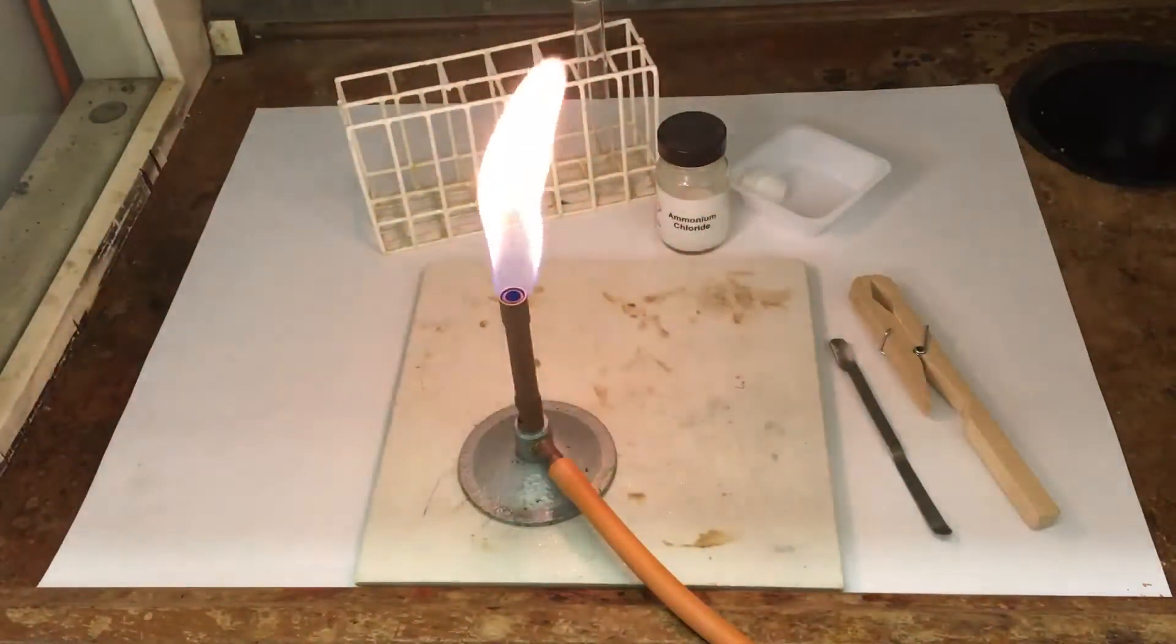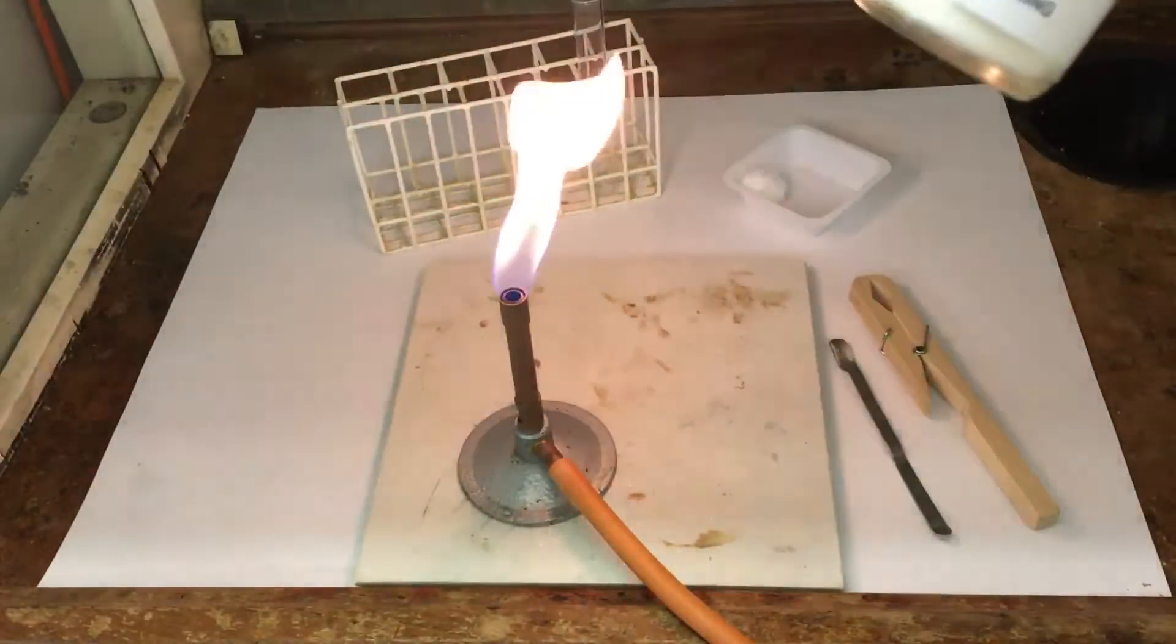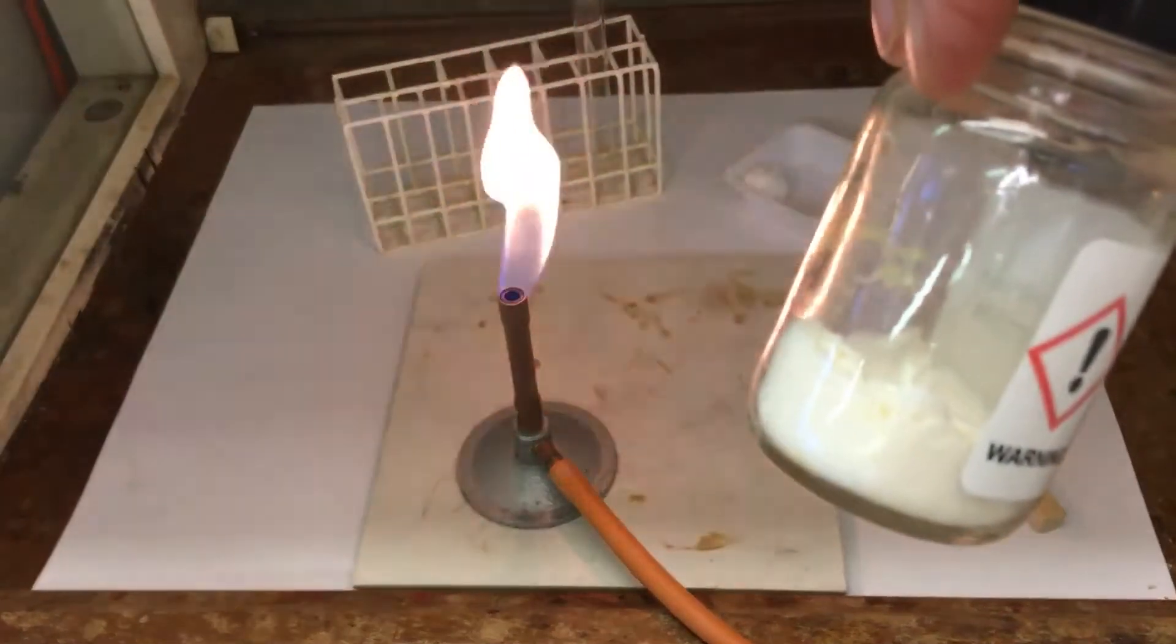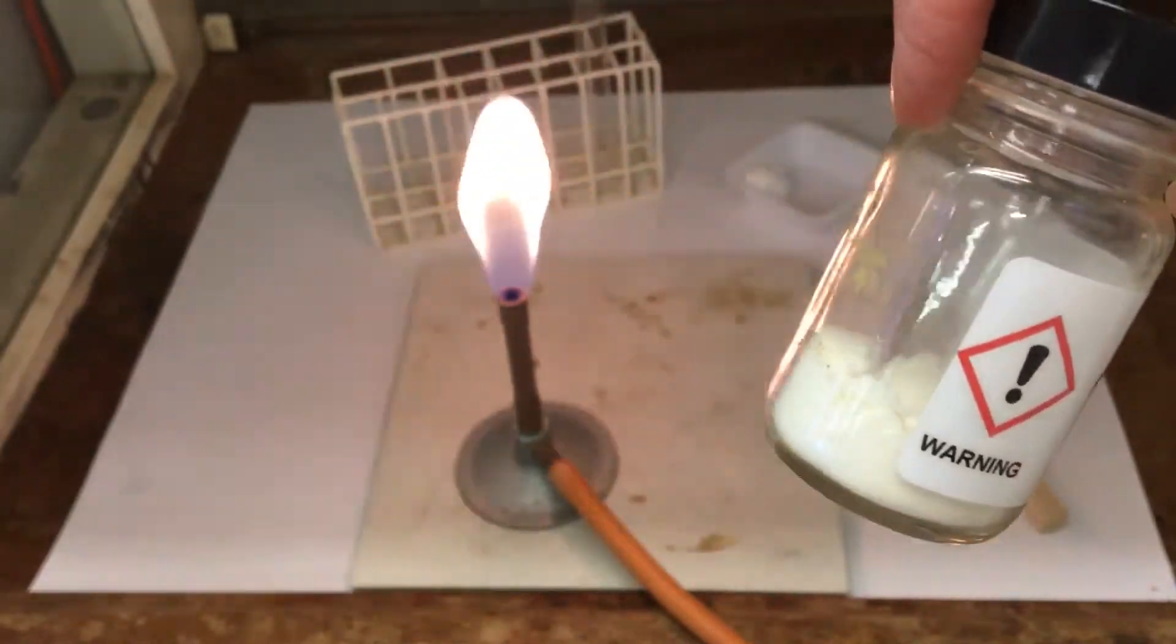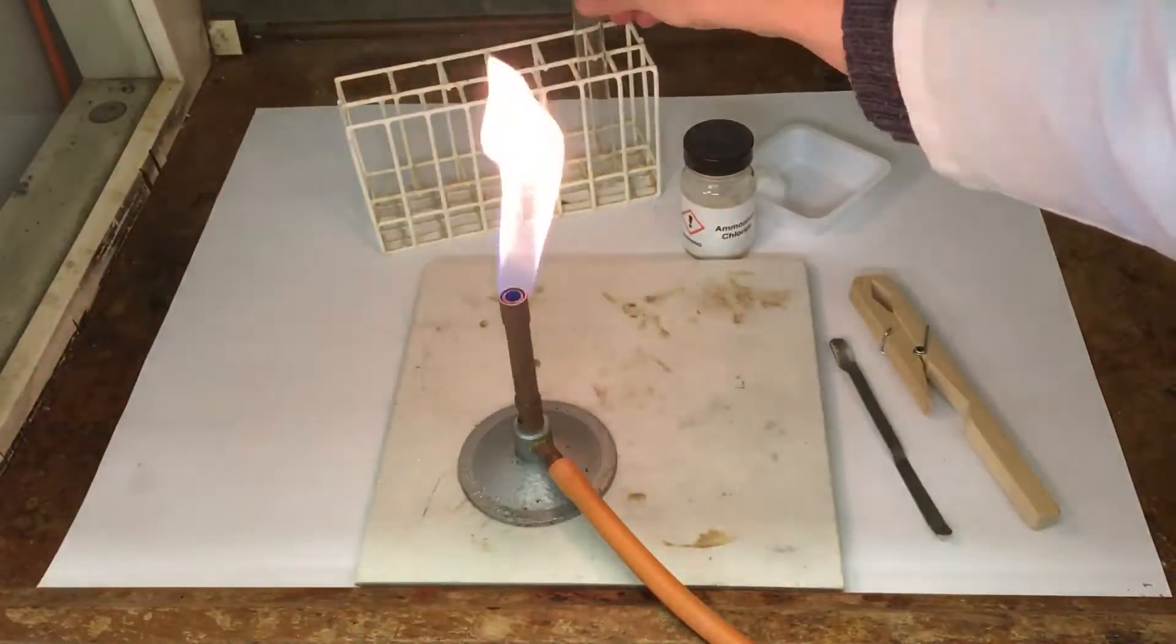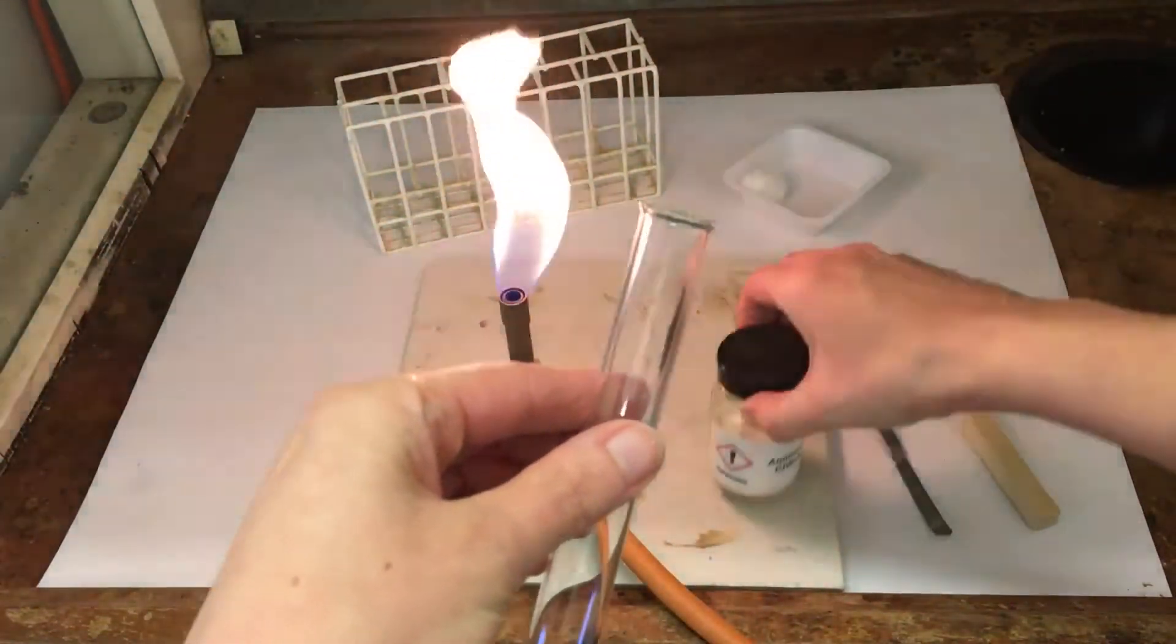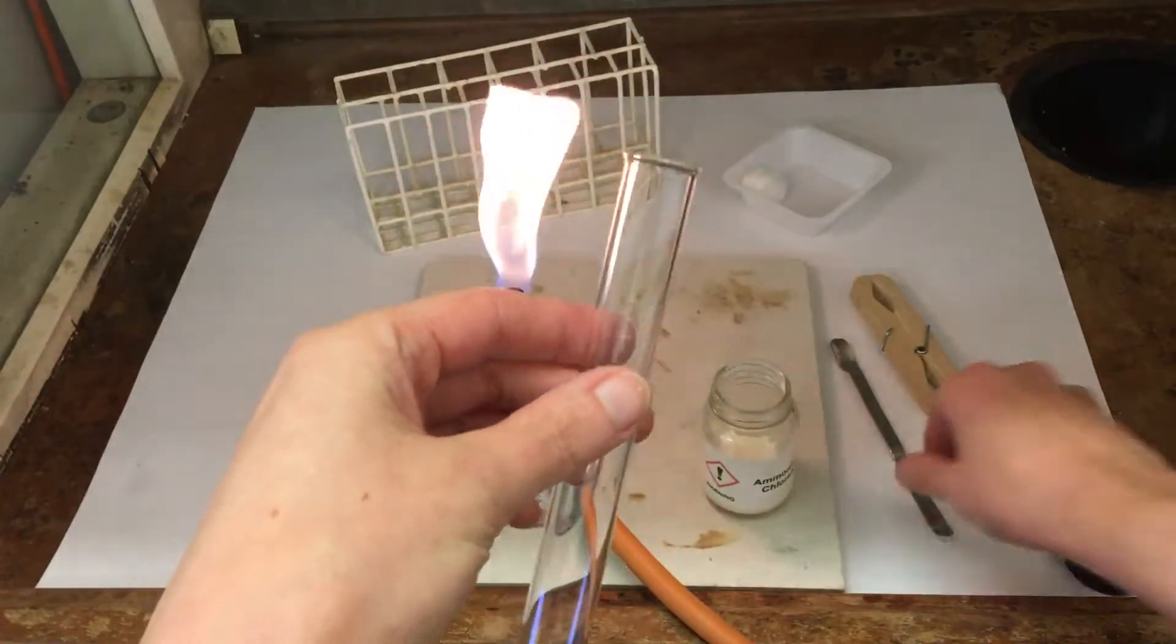In this experiment we're going to heat the white powder ammonium chloride. So this is ammonium chloride. We're going to use a Bunsen flame to heat it. First of all I'm going to pop a spatula full of the ammonium chloride into a test tube.